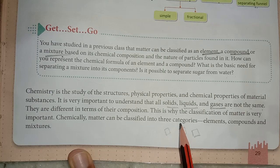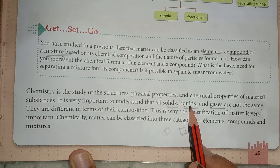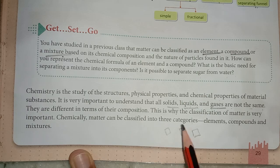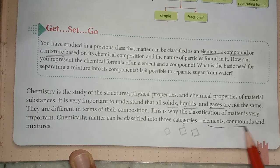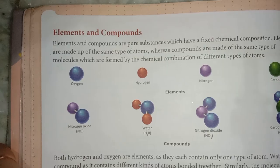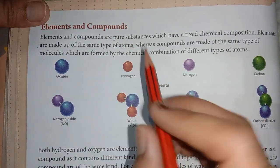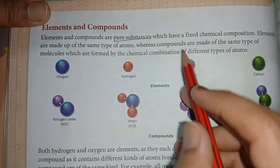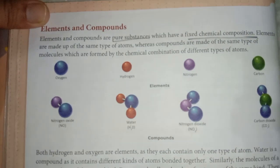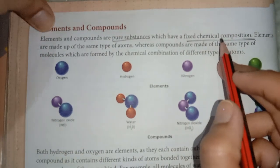Chemically, matter can be divided into three categories: elements, compounds, and mixtures. Elements and compounds are pure substances, which have a fixed chemical composition — meaning the ratio of the substances found in them remains fixed. Elements are made up of the same type of atoms.